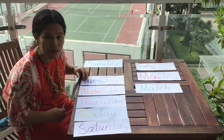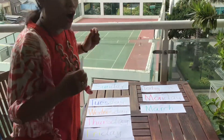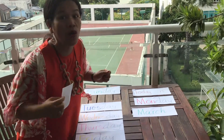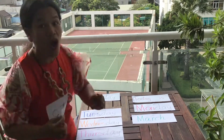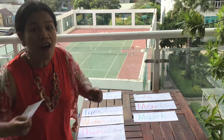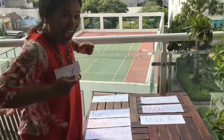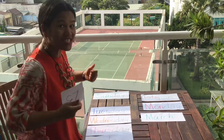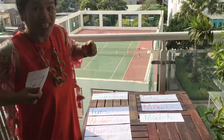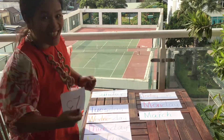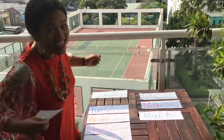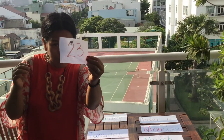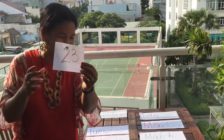Hop, hop, hop, hop. Do you know how to hop? Hop, hop, hop, hop, hop, hop. Okay, you're going to hop to 23. Ready? Go! 1, 2, 3, 4, 5, 6, 7, 8, 9, 10, 11, 12, 13, 14, 15, 16, 17, 18, 19, 20, 21, 22, 23. Very good. That's how 23 looks like. Well done.